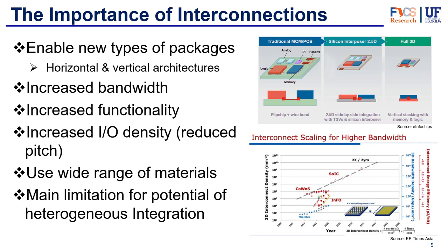These interconnects use a wide range of materials — they usually start with gold or copper, but they can use silver or aluminum. The reason they're so important is because they are one of the keystones to the advancements of heterogeneous integration. They are probably the main limitation for the potential that HI has. As soon as we bring our interconnections up to speed and get them to be as good as they can be, they will enable so many more types of efficient packages — and it's one of the things that needs to be improved if HI is going to remain relevant in the future.